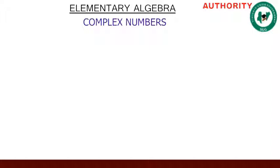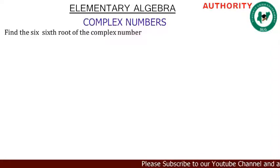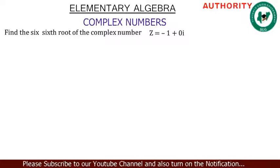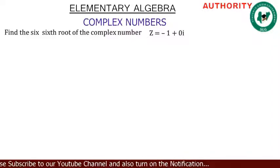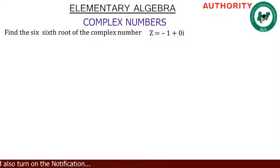Alright, welcome again. We are still treating complex numbers. Let's take a look at the second example on roots of complex numbers. Find the sixth root of the complex number z = -1 + 0i.